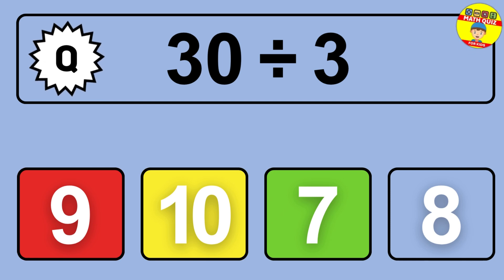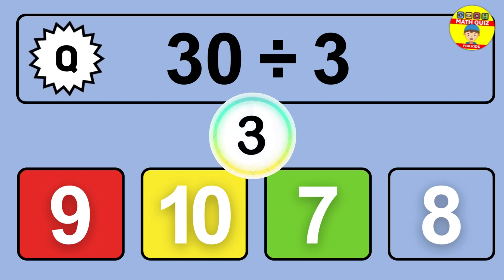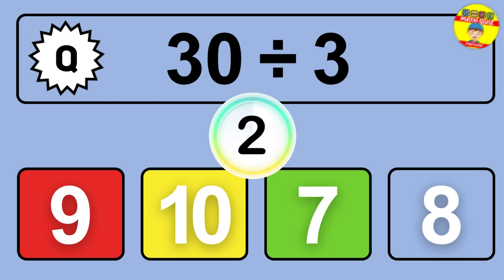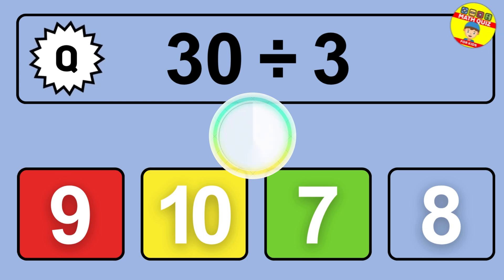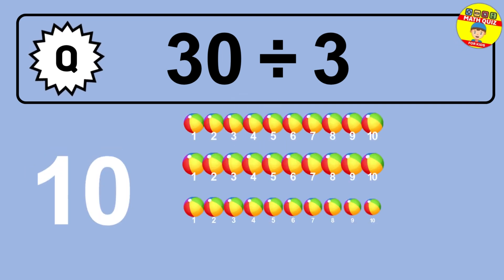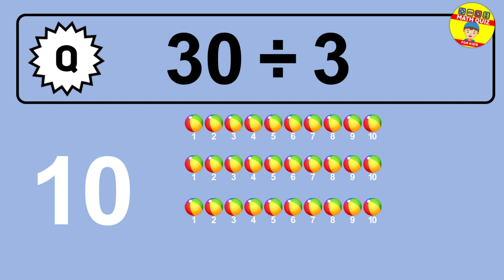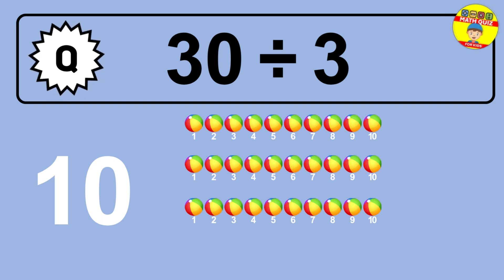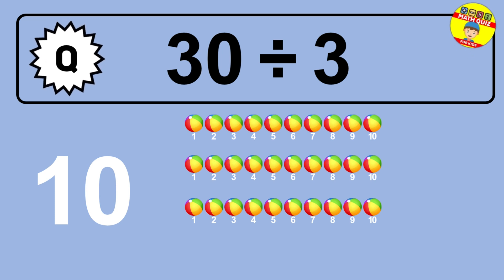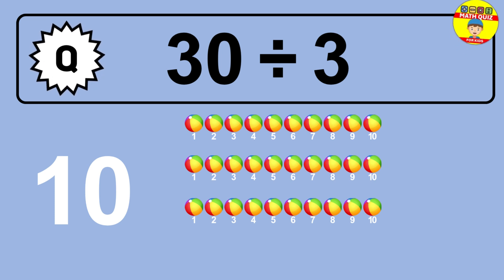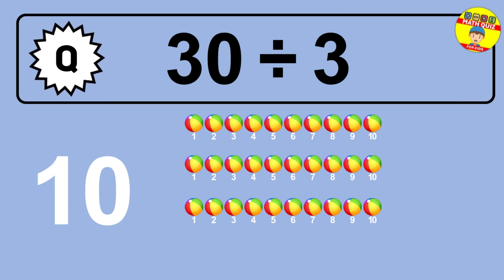What is 30 divided by 3? Picture this — 30 objects to divide into groups of 3. How many groups can you make? Let's think about it. Ready to find out? Let's break it down. Let's imagine you have 30 objects. Can you picture them lined up? Now think about splitting them equally into smaller groups.